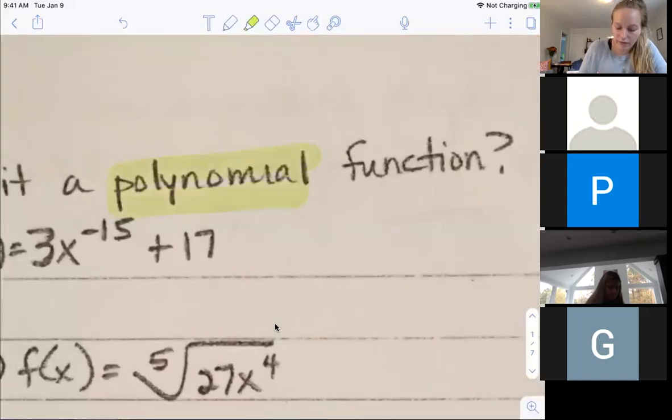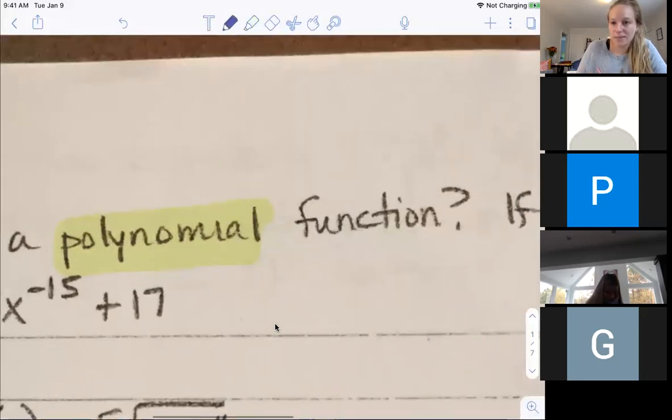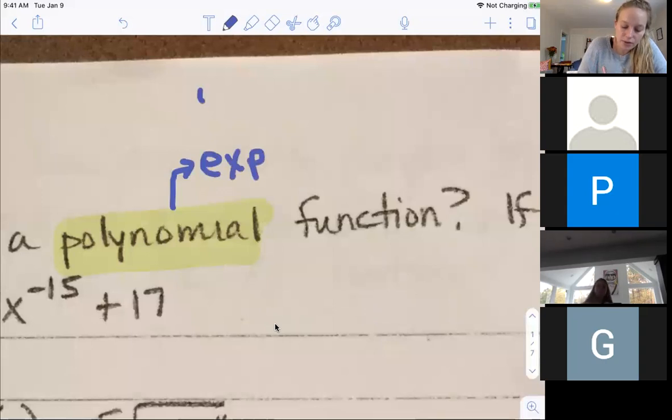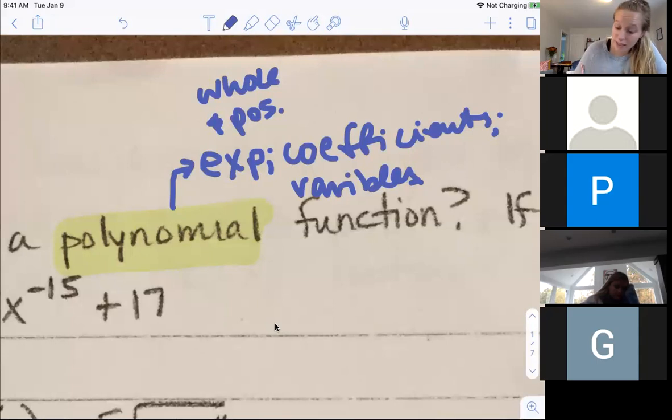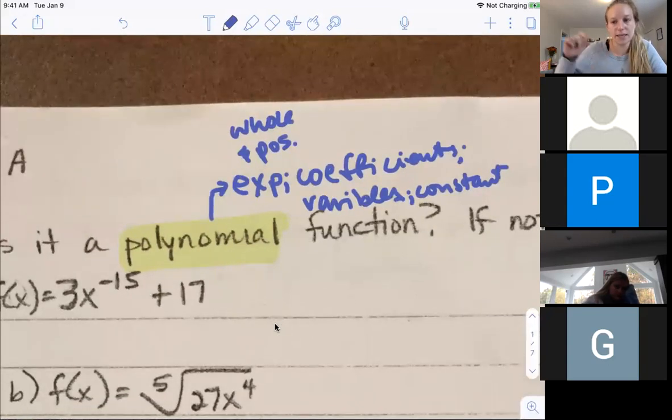So unit two is on polynomial functions, rational, radical functions, and we're starting with polynomial, which are things that you should be pretty familiar with. A polynomial function - poly just means many, and nomial means like many parts or pieces. It's made up of exponents, and those exponents are usually whole and positive.